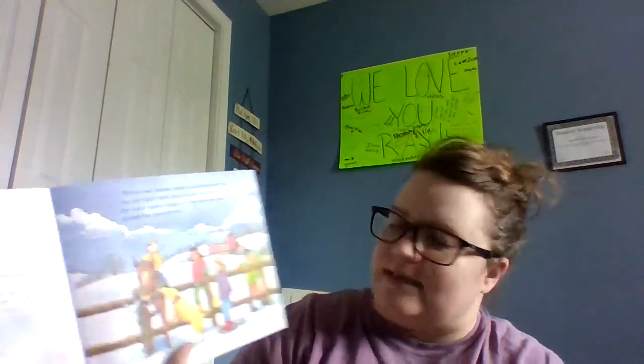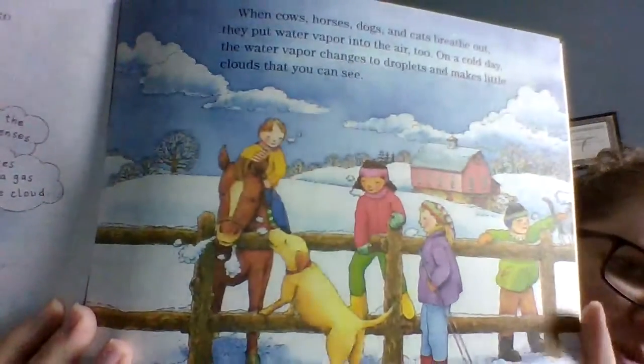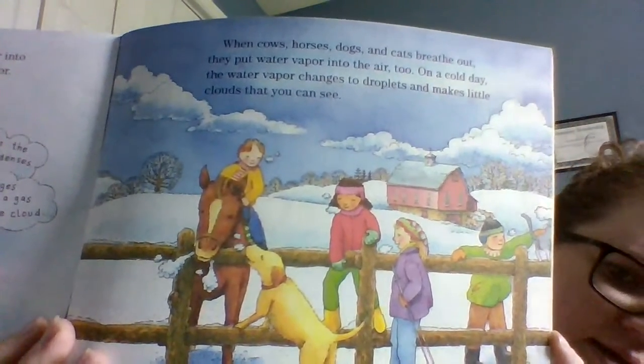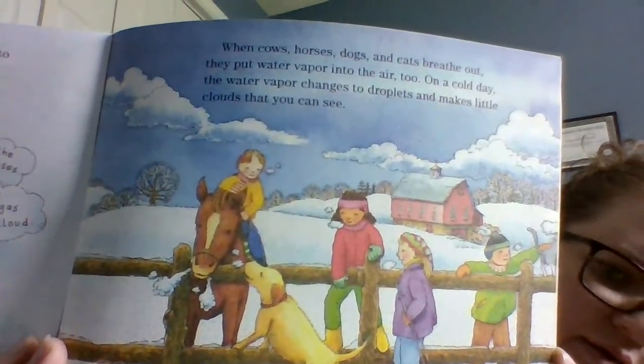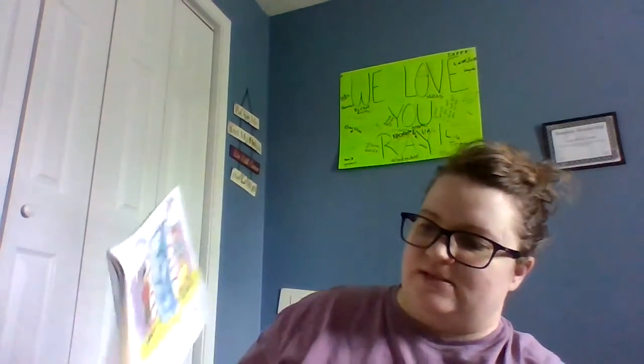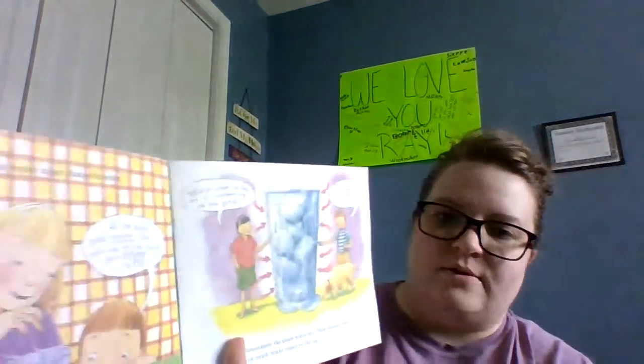When cows, horses, dogs, and cats breathe out, they put water vapor into the air too. On a cold day, the water vapor changes to droplets and makes little clouds that you can see. There's the horse and the dog — they also have water vapor that comes out. You ever see your breath when it's really cold outside? That's what it's talking about.